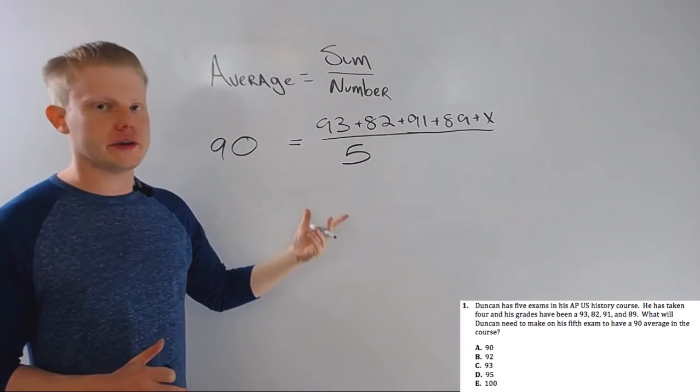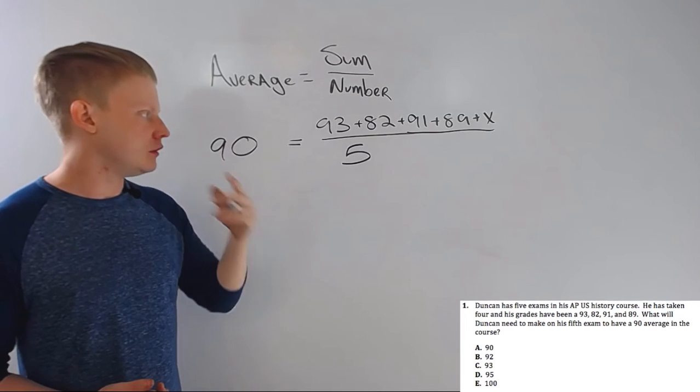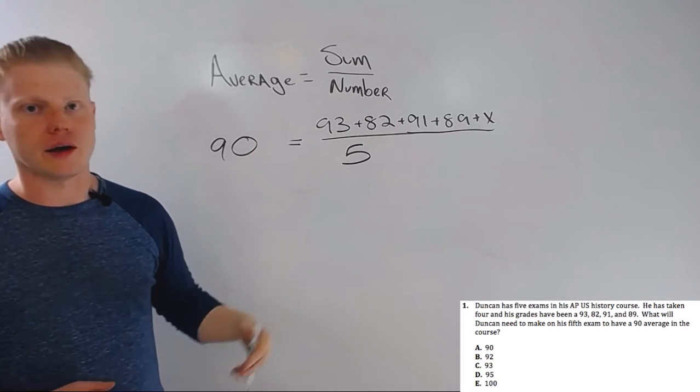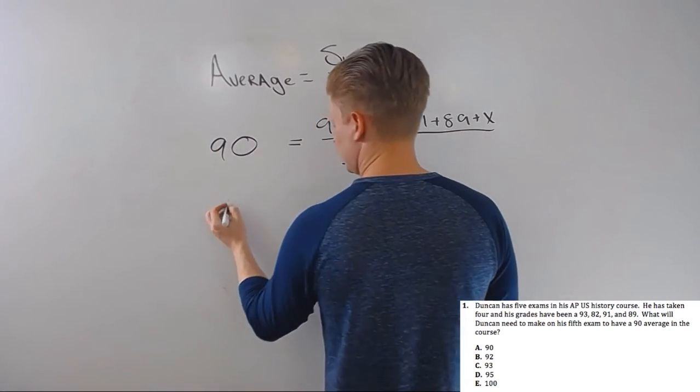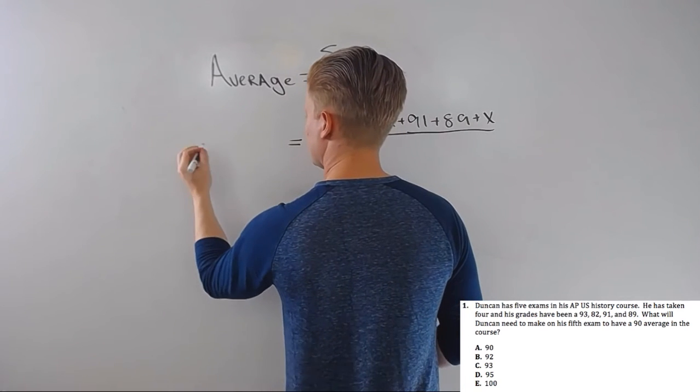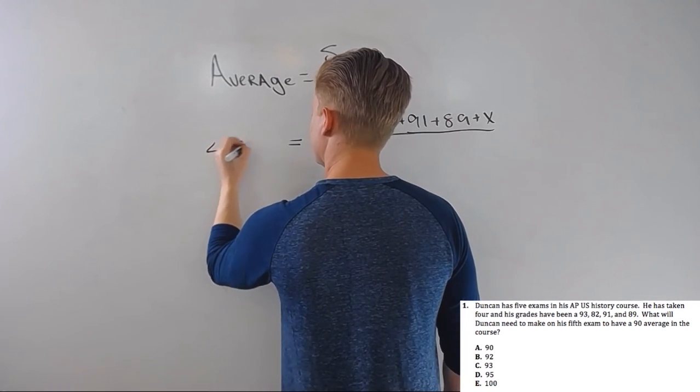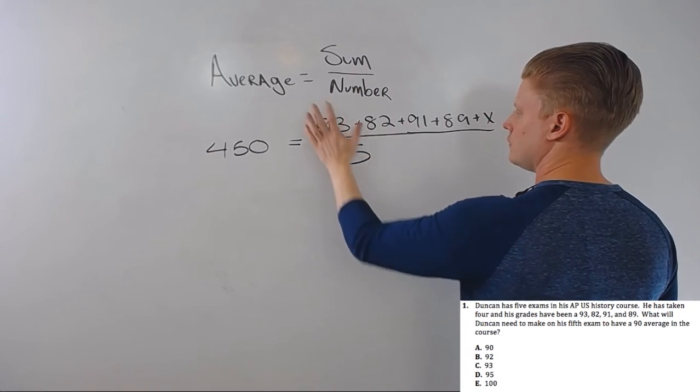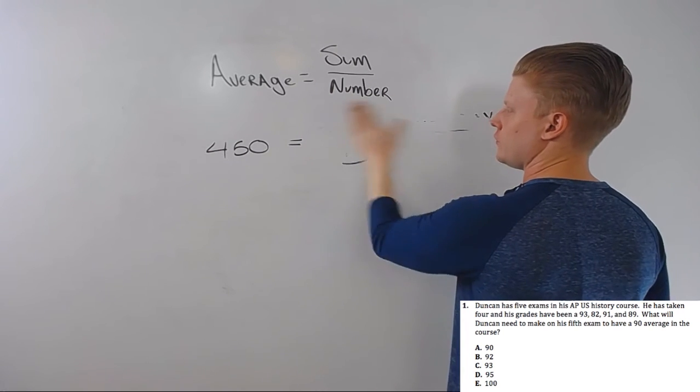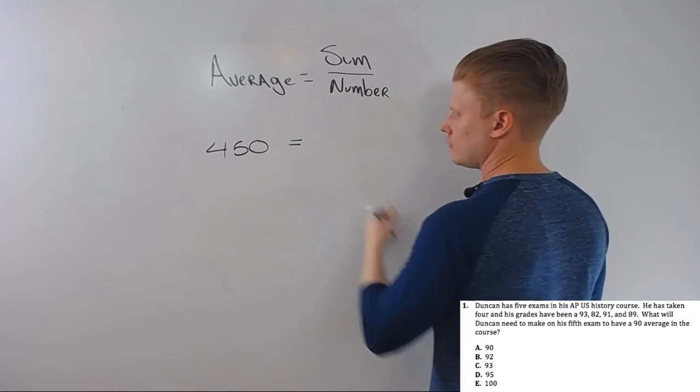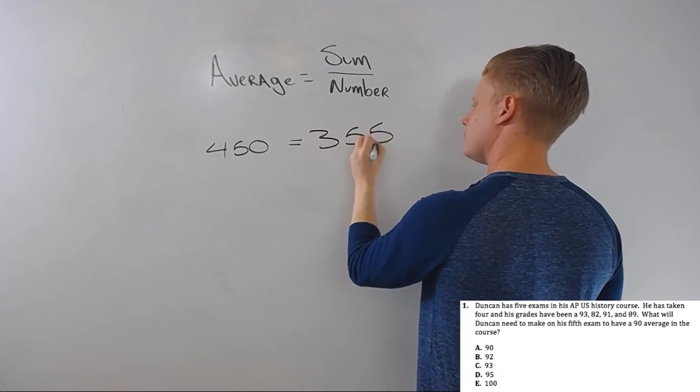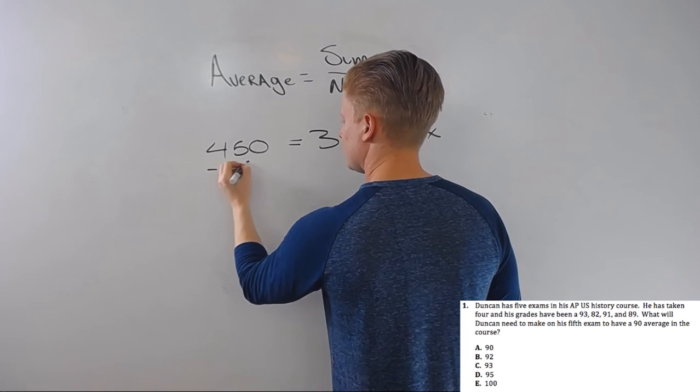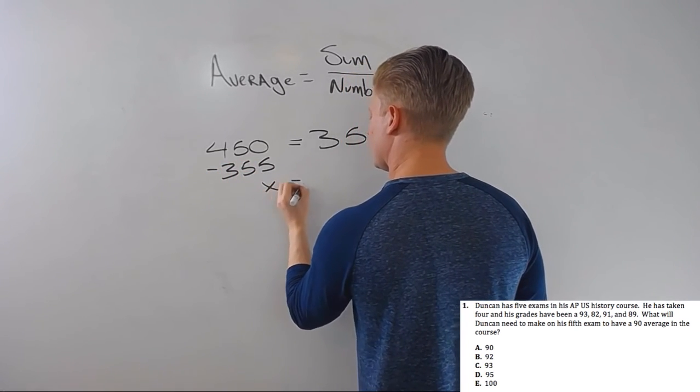Now, look, it's just a linear equation, and not even a very hard one. You can do this in any order you like. You can add all these things together first. You can multiply by five. I'm going to multiply by five first. So, I'm going to get 450 equals 355 plus x. Subtract 355, and I'll get x equals 95.